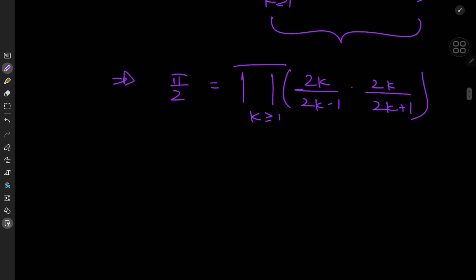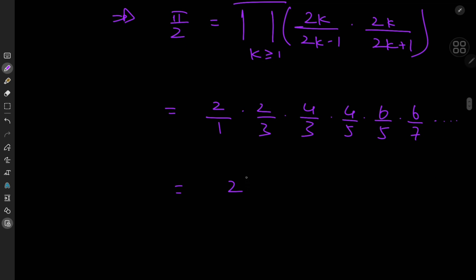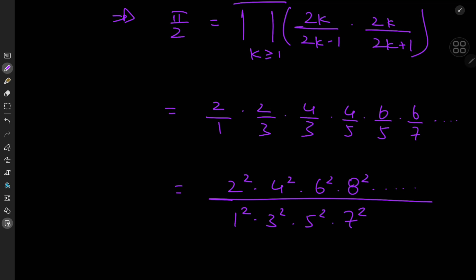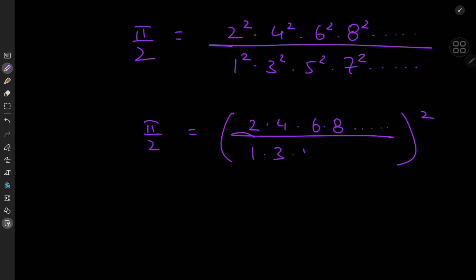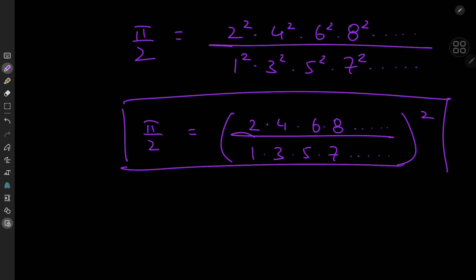Now we expand the right-hand side to uncover a really nice result. For k equal to 1 we have 2 over 1 times 2 over 3; for k equal to 2 we have 4 over 3 times 4 over 5; for k equal to 3 we have 6 over 5 times 6 over 7; and on and on we go. This means we have 2 squared times 4 squared times 6 squared times 8 squared and so forth, divided by 1 squared times 3 squared times 5 squared times 7 squared and so forth — meaning that pi by 2 is the square of the infinite product of even integers divided by the infinite product of odd integers, which is extremely cool and extremely beautiful.